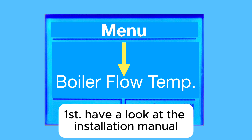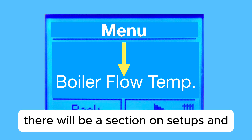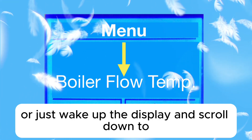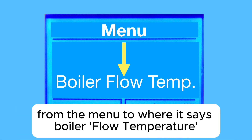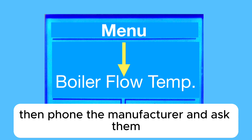First, have a look at the installation manual if you've got it to hand. There will be a section on setups and parameters of the boiler. Or just wake up the display and scroll down from the menu to where it says boiler flow temperature. If you're not sure, then phone the manufacturer and ask them.